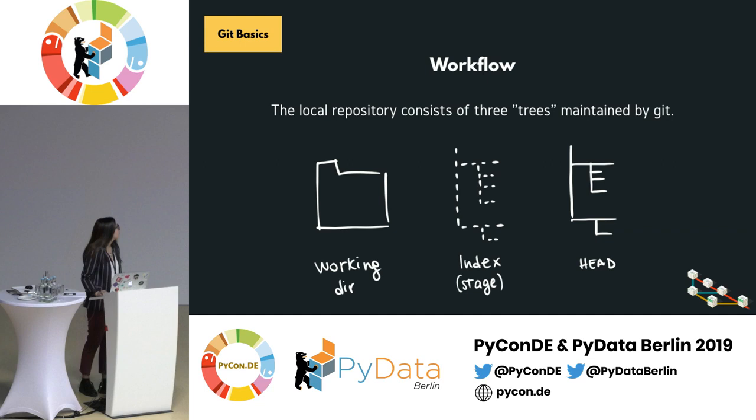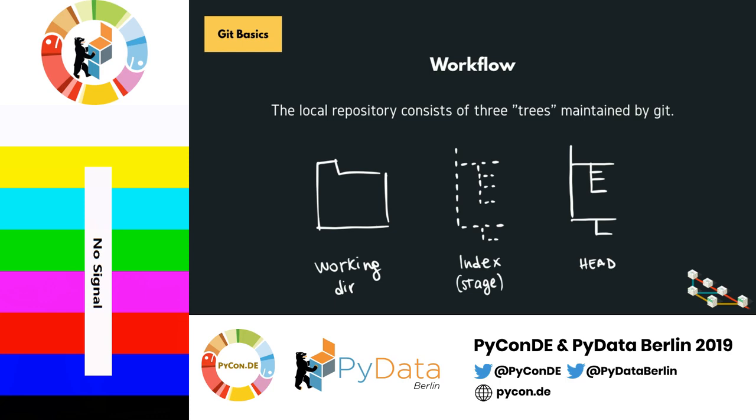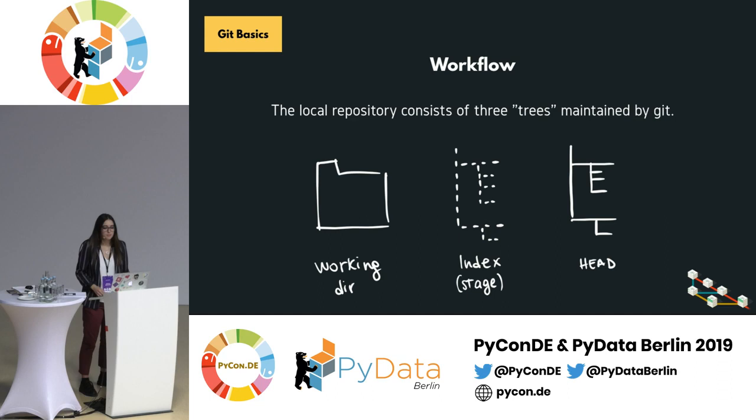The local repository consists of three trees. The first one is the working directory, which contains the actual files. Then there is the index, which acts as a staging area for your files. And finally the HEAD, pointing to the last commit you've made.